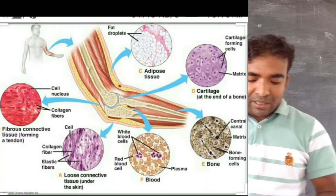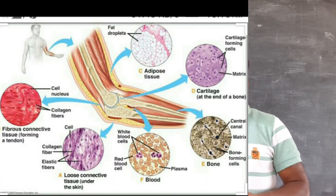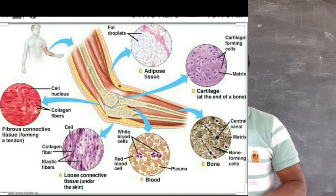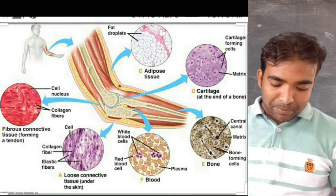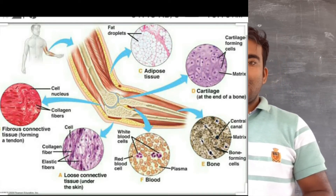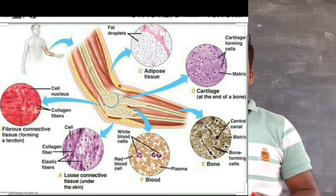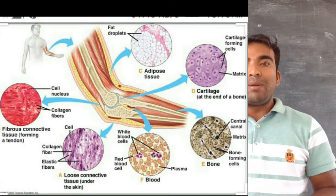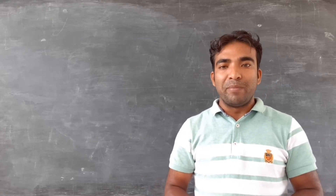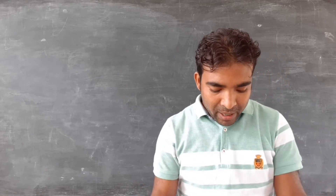First, we will discuss about blood. Blood has a fluid matrix called plasma, and in this plasma, WBC (white blood cells), RBC (red blood cells), and platelets are embedded or suspended. This plasma contains proteins, salts, and hormones. The function of blood is very important - it is responsible for transport of materials and nutrients from one part to another part in our body.